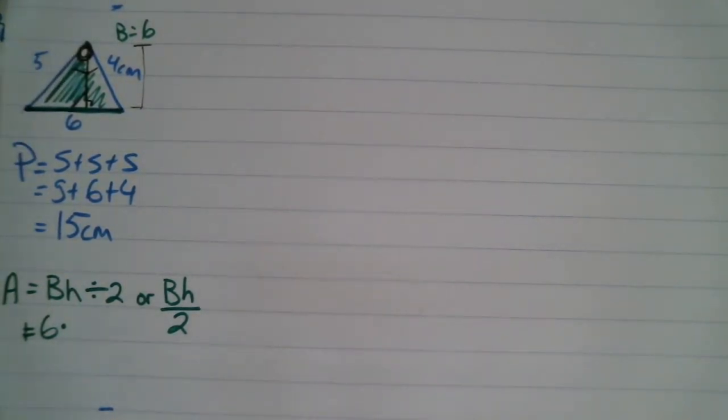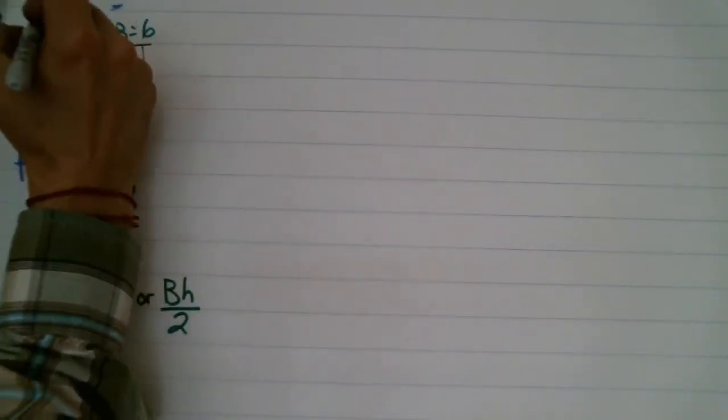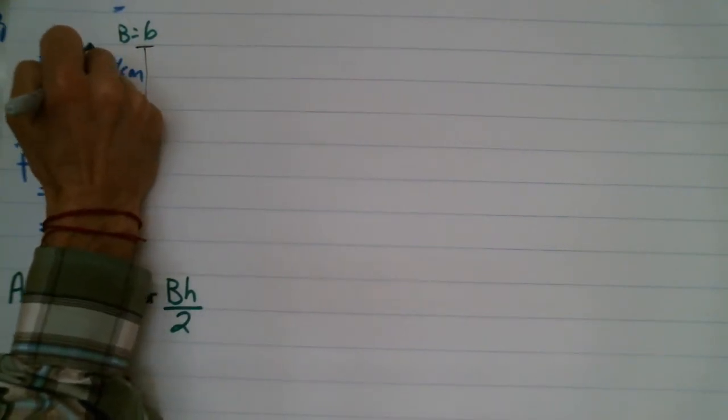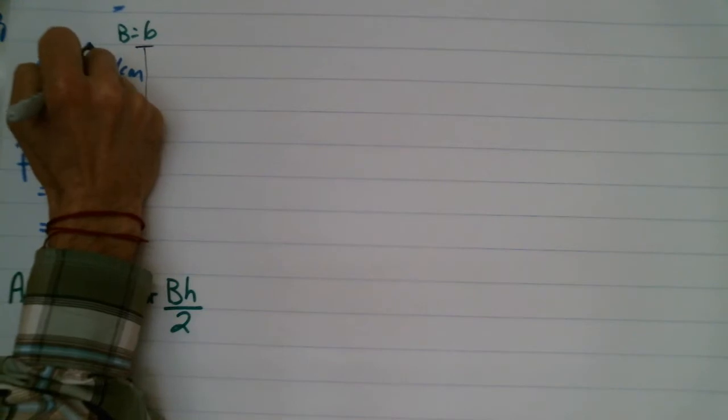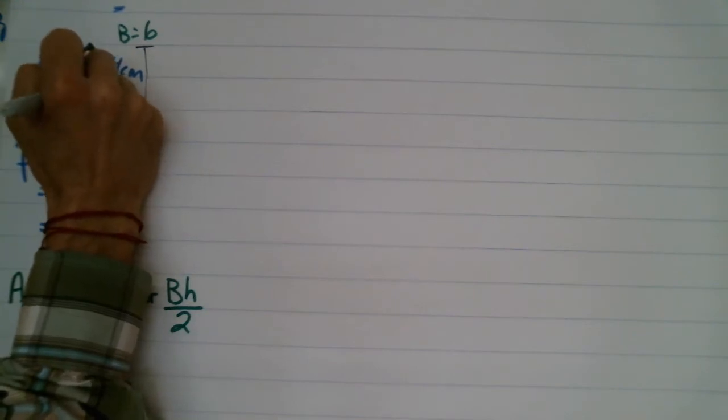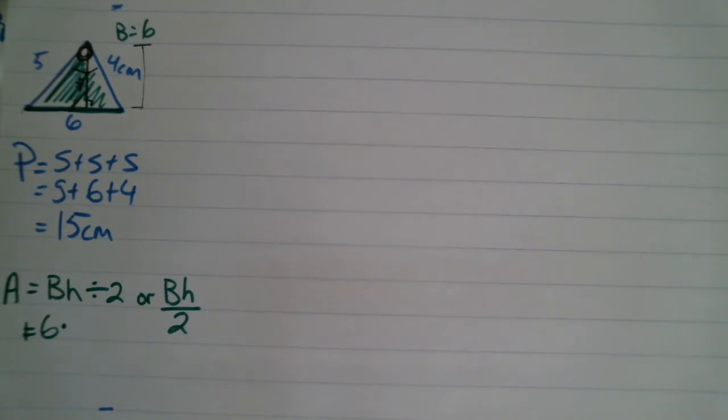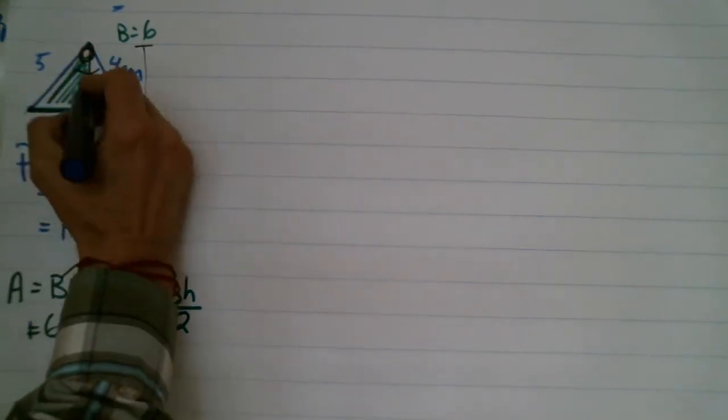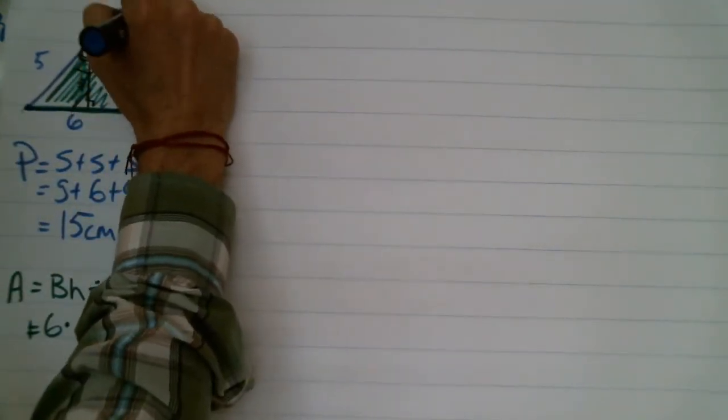So for this one, let's say that the height of the triangle is, we'll make it 4. The worksheets that you have, they'll always tell you what that height is. So here, my height now, height equals 4.